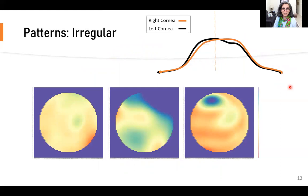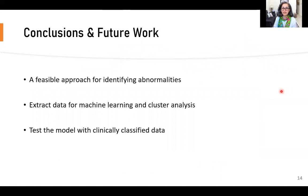And finally, we have irregular for anything that can't be properly described. In conclusion, this is a feasible approach for identifying abnormalities. For future work, I'm planning to extract data for machine learning and cluster analysis and then test the model with clinically classified data. Thank you.